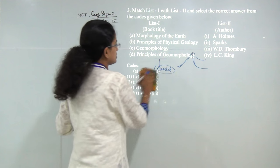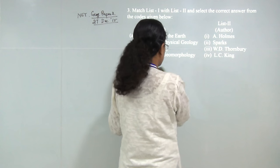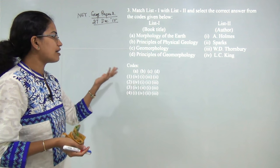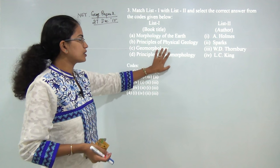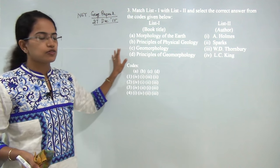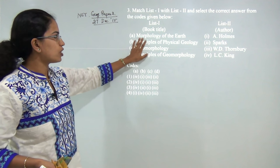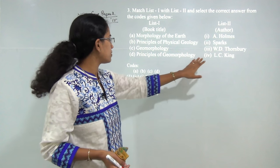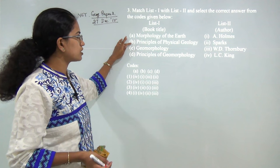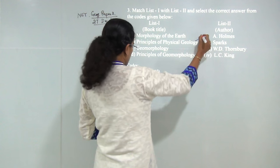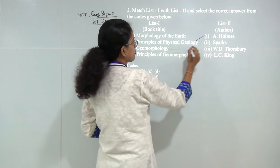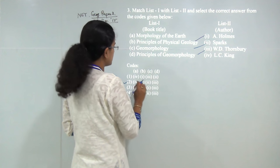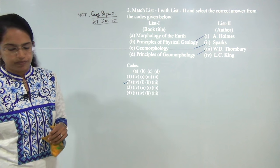Next question. This is from geomorphology but directly based on knowledge. You have book titles and authors given, and you have to find the correct match. The correct match is: Morphology of Earth by King, Principles of Physical Geography by Holmes, Concept of Geomorphology by Sparks, and Principles of Geomorphology by Thornbury. You have 4, 1, 2, and 3 as the correct option, so the answer is 2.